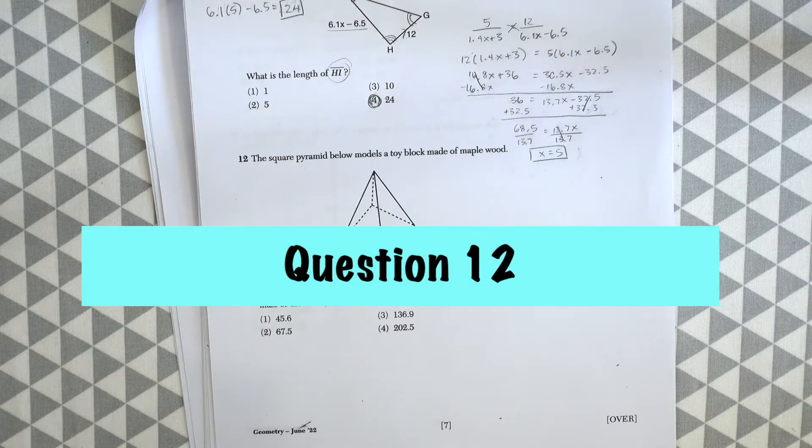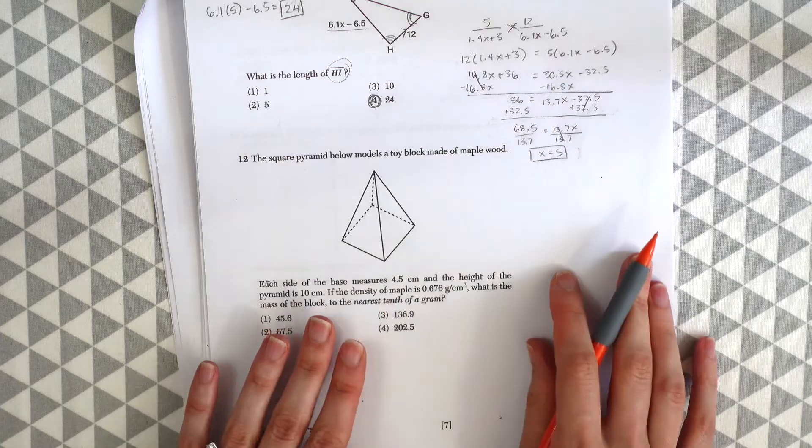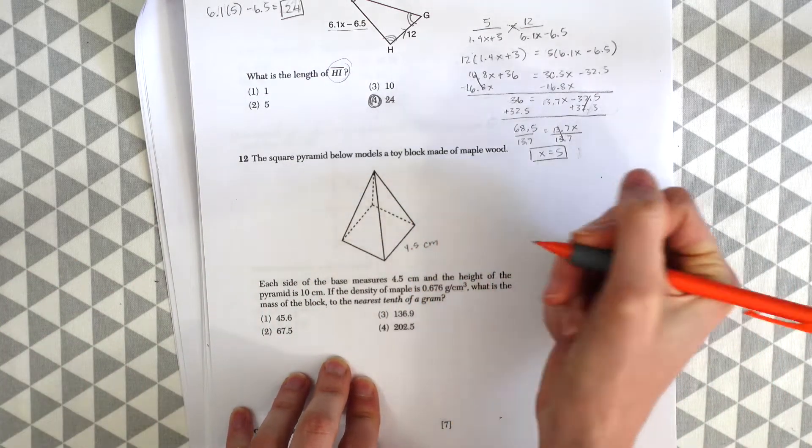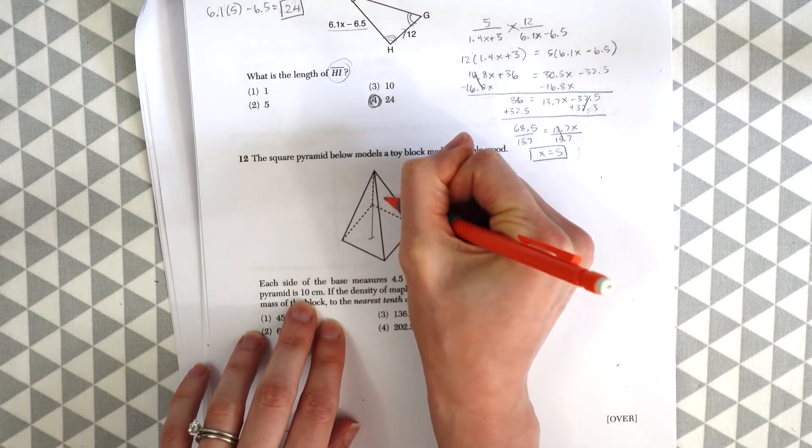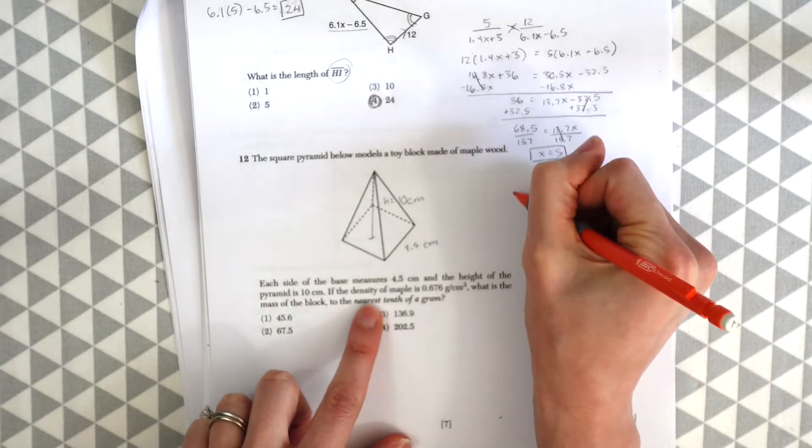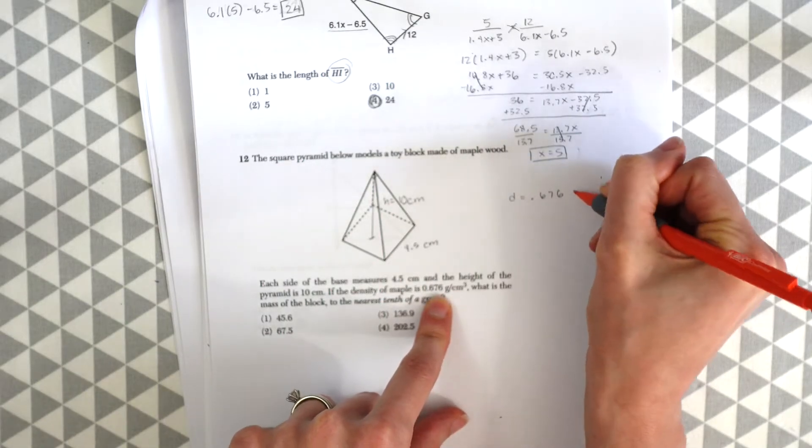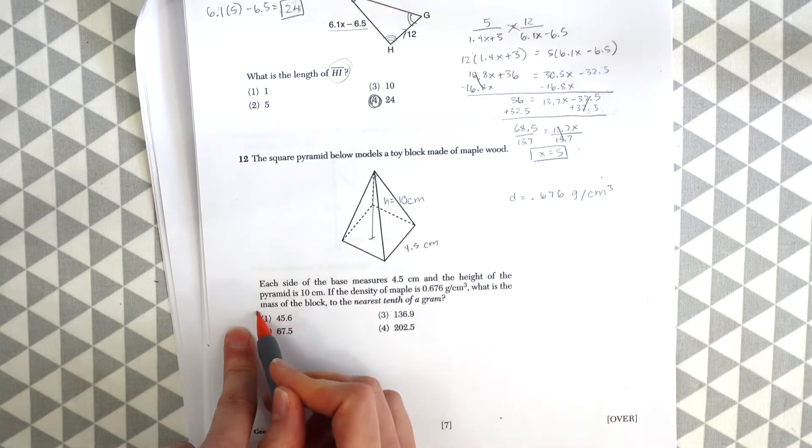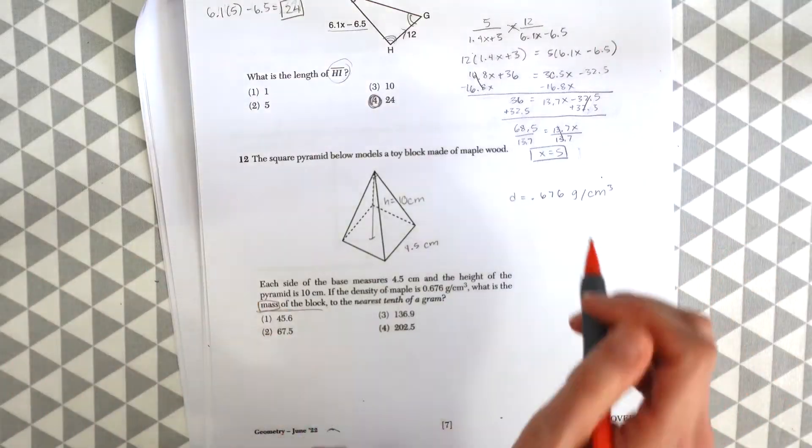On to question number 12. The square pyramid below models a toy block made of maple wood. Each side of the base measures 4.5 centimeters. So let's write that in, 4.5 centimeters. And the height of the pyramid is 10 centimeters. So let's just draw that. Height equals 10 centimeters. If the density of the maple is equal to 0.676 grams per centimeters cubed, what is the mass of the block to the nearest tenth of a gram? So we're looking for the mass. They give us the density.